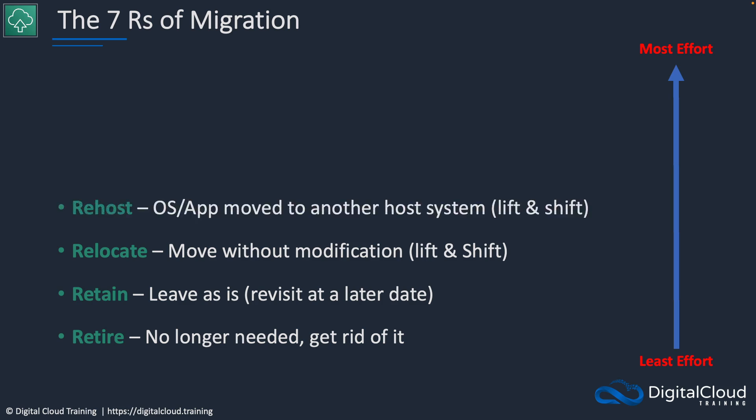Next we have rehost, which is also known as lift and shift in AWS terminology. In this case you're taking your OS or your application from the on-premises data center and moving it to AWS. For example, you might have a virtual machine running on VMware and want to migrate that to Amazon EC2. There is a bit of change here — you're changing the underlying hypervisor and the platform — so it does incur some changes. I think of it as being a little bit more than a lift and shift, but this is what AWS calls it.